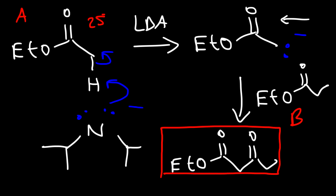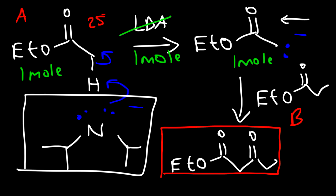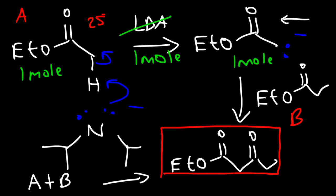It's important to react ester A with LDA in a 1:1 ratio. If you use 1 mole of ester A with 1 mole of LDA, you're going to get 1 mole of the deprotonated ester A, and LDA will be completely consumed. This is good because once you add ester B into the solution, you don't want it to react with LDA — you want LDA to be completely consumed by the first ester so it doesn't deprotonate ester B. This method is not perfect and the yield will not be 100%, but the A+B product will be the major product — so it's a directed Claisen condensation reaction.